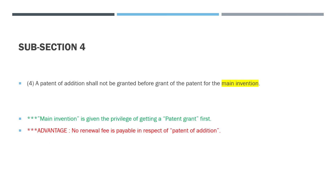Subsection 4: a patent of addition shall not be granted before the grant of the patent for the main invention. The key word is main invention — the main invention is given the privilege of getting a patent grant first. The advantage is that no renewal fee is payable in respect of a patent of addition. All four subsections of section 54 are now completed.